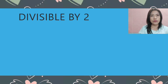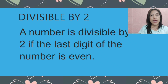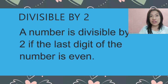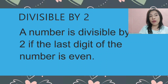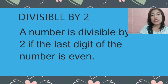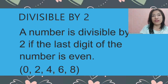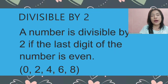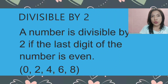Divisible by 2. A number is divisible by 2 if the last digit of the number is an even number. If you cannot remember what the even numbers are, we have 0, 2, 4, 6, and 8 — those are the even numbers.